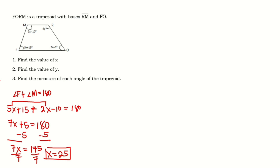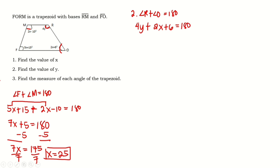Now let's proceed to question number 2 — solving for the value of y. We're going to use angle R and angle O, which are also supplementary. So angle R plus angle O equals 180 degrees. Angle R is 4y and angle O is 2x + 6. Since we now have the value of x, which is 25, we substitute: 4y + 2(25) + 6 = 180 degrees. Simplifying: 4y + 50 + 6 = 180.